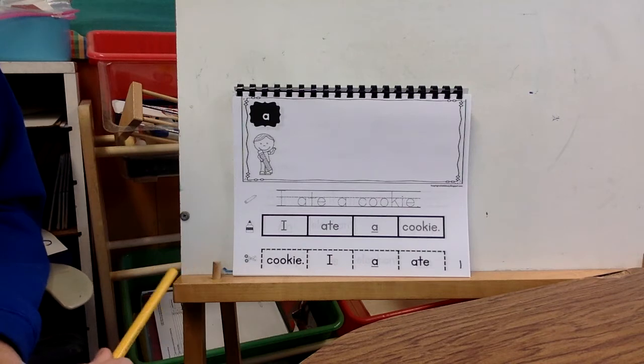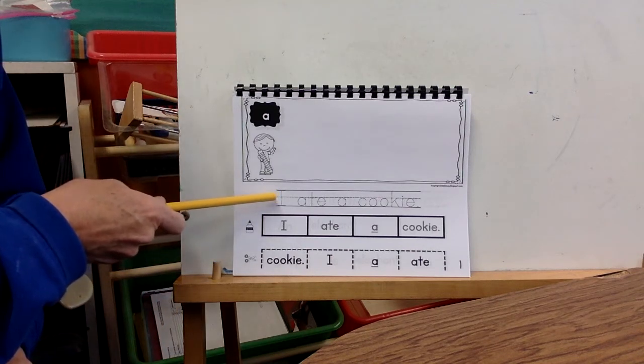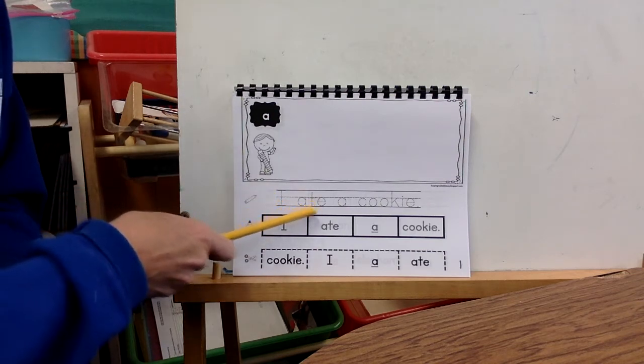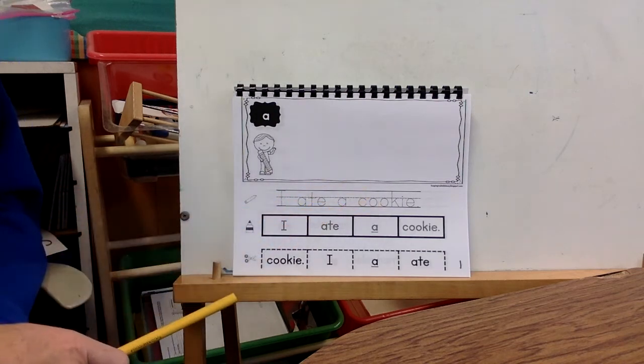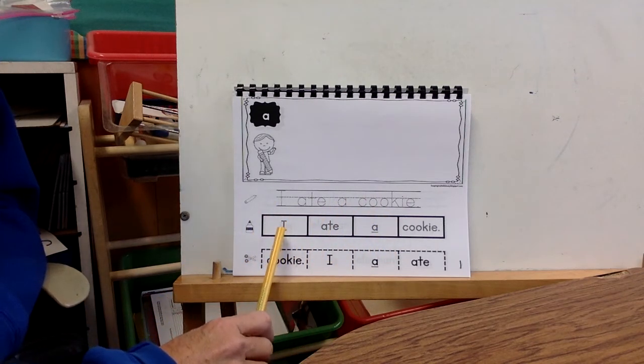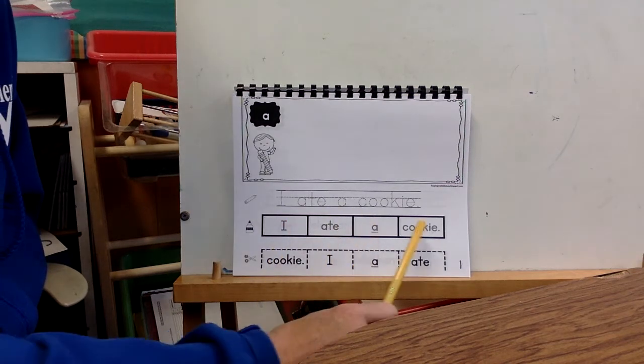And you're going to need an adult. The first thing is you're going to ask the adult to read this sentence with you. So this sentence says, I ate a cookie. Now I want you to touch the same sentences down here, and I want you to touch and read it back to the adult. I ate a cookie.